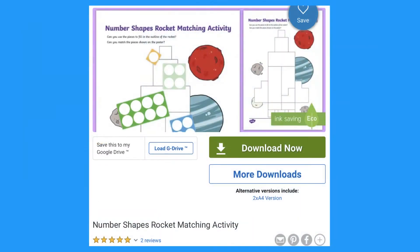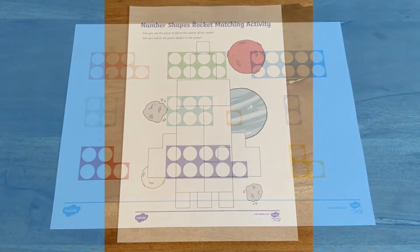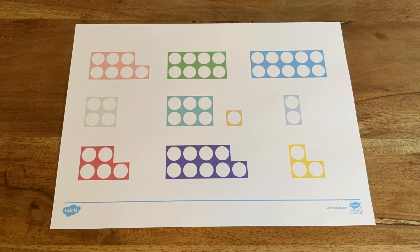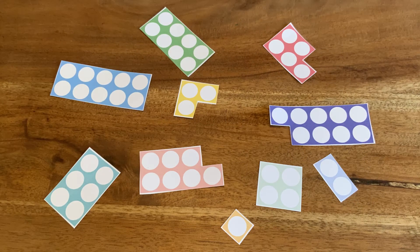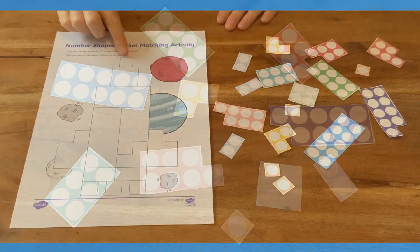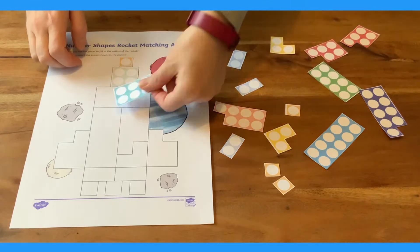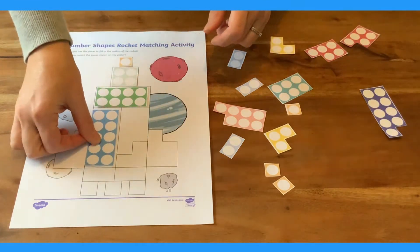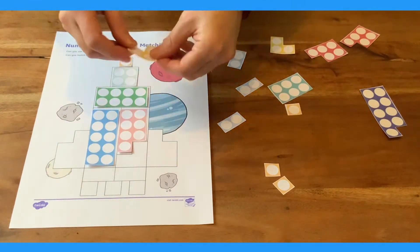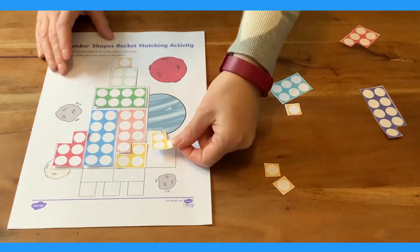This rocket number shape activity is a great place to start. Print out the rocket and Twinkl's number shape cutouts. Now cut out the number shapes to be used again and again. Children must find the right number shapes to make the rocket. This activity helps children to become really familiar with the different number shapes and how many they represent.